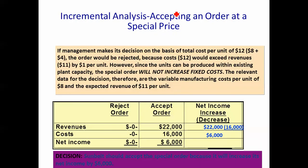Let's use incremental analysis. If managers make this decision based on total costs of $12, the order should be rejected, because $12 in costs exceeds the $11 revenue being offered. However, when you think about it and understand how costs behave, this special order will not increase fixed costs — it will only increase variable costs.